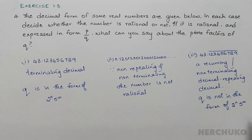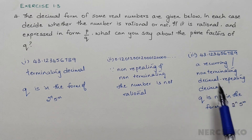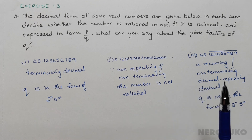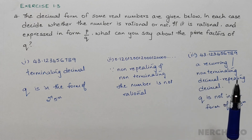The denominator can have other numbers besides 2 or 5 as prime factors.